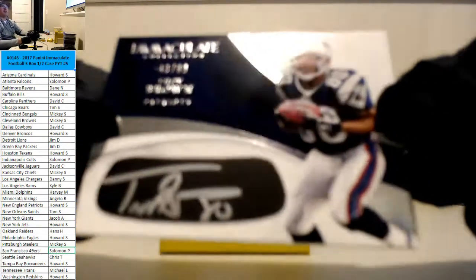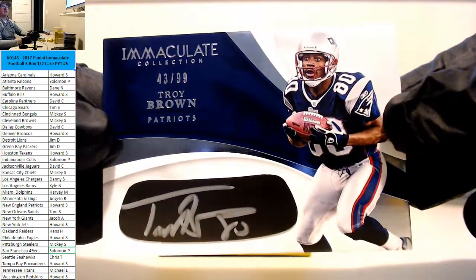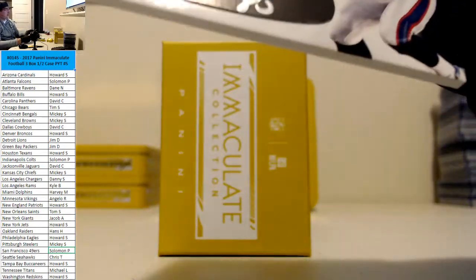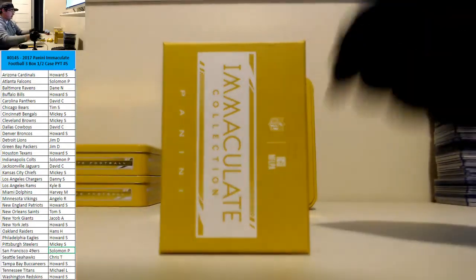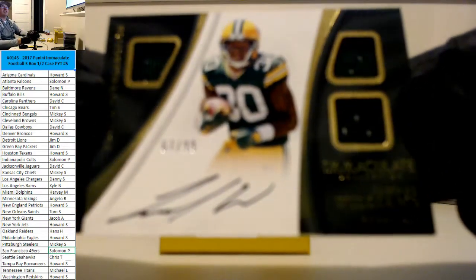All right, for the Patriots, Trey Brown. 43 and a 99. We'll try to follow that up. For the Packers, Mr. Jamal Williams. 67 and 99, triple jersey.